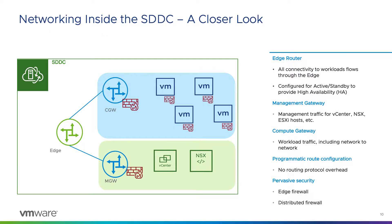As you can see from this high-level architecture diagram, we have an edge, which is our T0 router. All connectivity to workloads flows through this edge, and it's configured for active standby to provide high availability. Underneath the edge, we have two gateways: the CGW, or Compute Gateway, which handles workload traffic including network-to-network, and the MGW, or Management Gateway, which handles connectivity to vCenter, NSX, ESXi, and other add-ons.